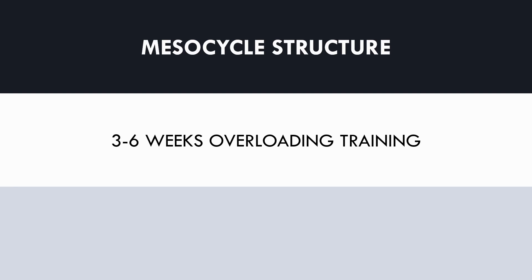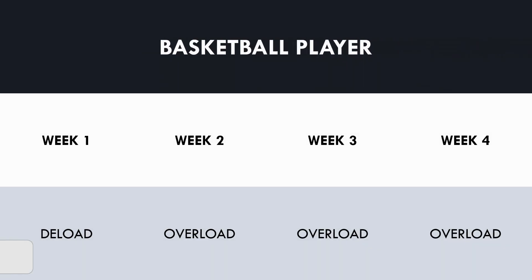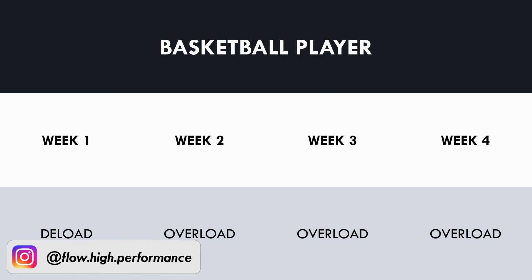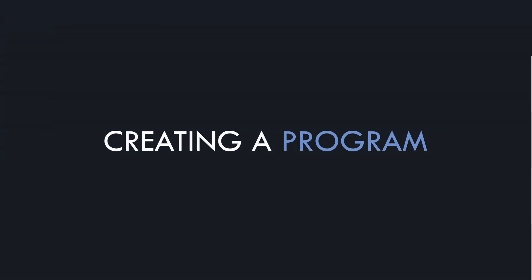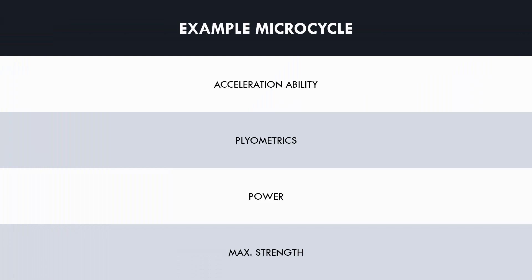Let's continue with our example of a basketball player from the previous videos to create a mesocycle for. For this athlete let's implement a four-week mesocycle including three weeks of overloading training and a one-week deload. We can now program the details of the mesocycle using the general microcycle created in part one of this video series as the basic structure, which is a single training session with only the training qualities outlined.